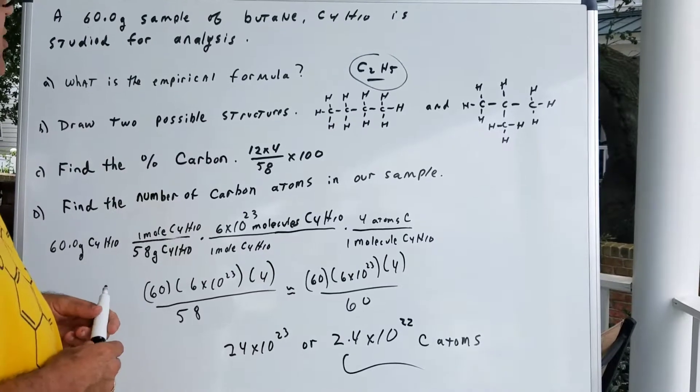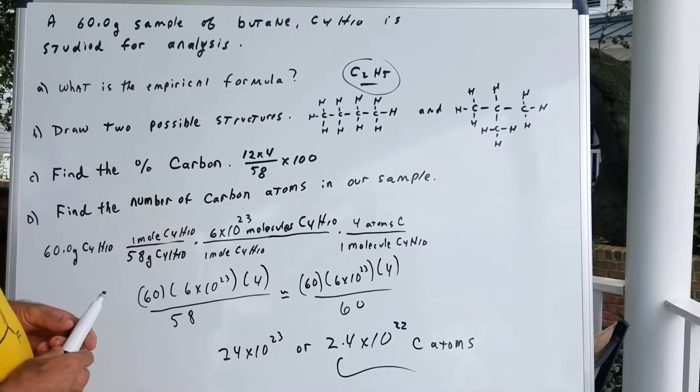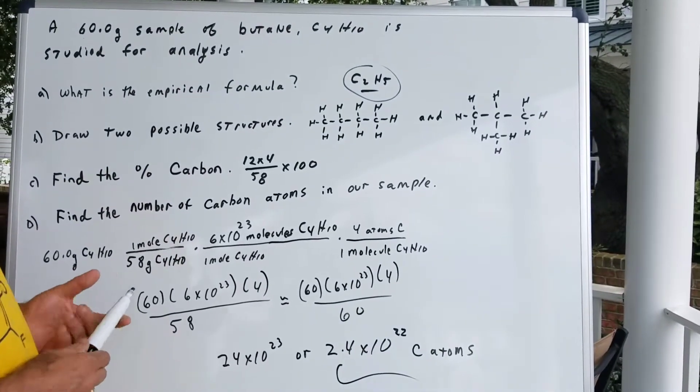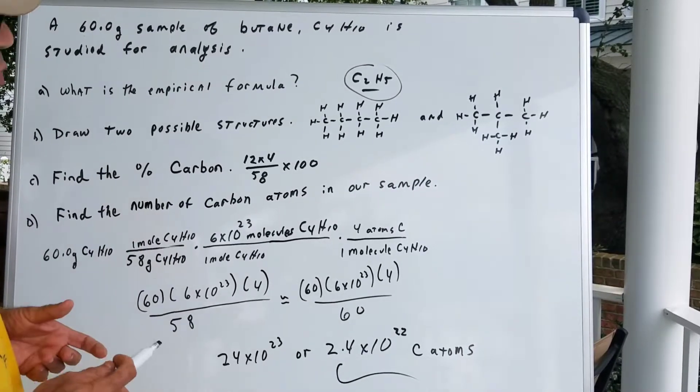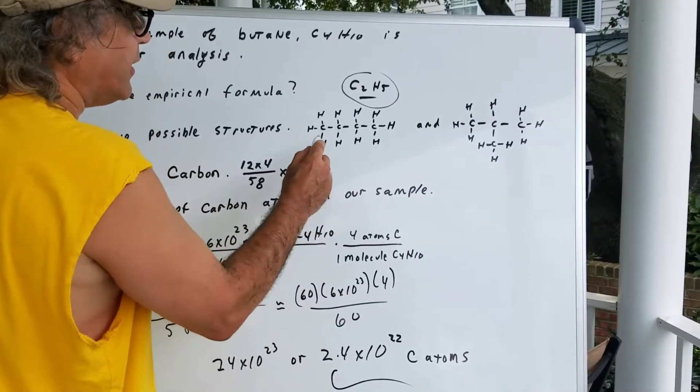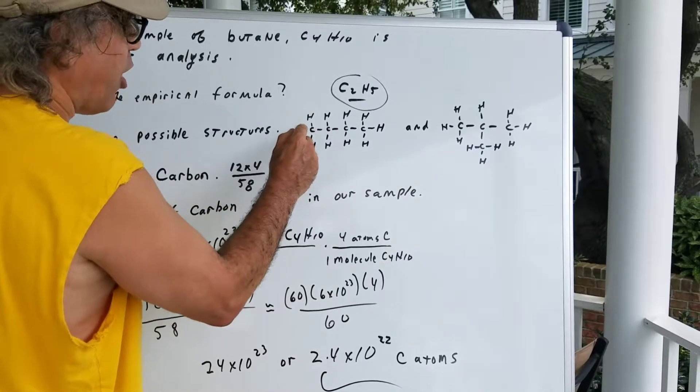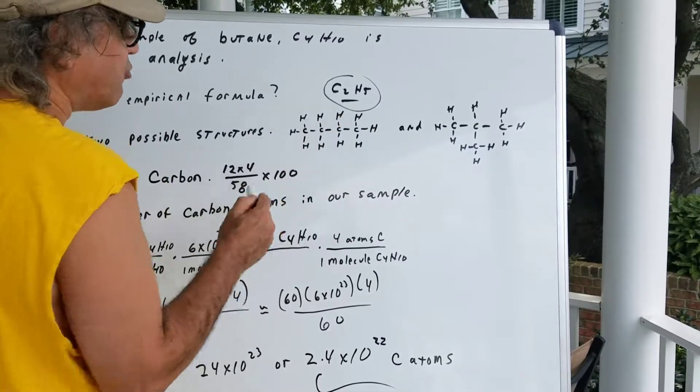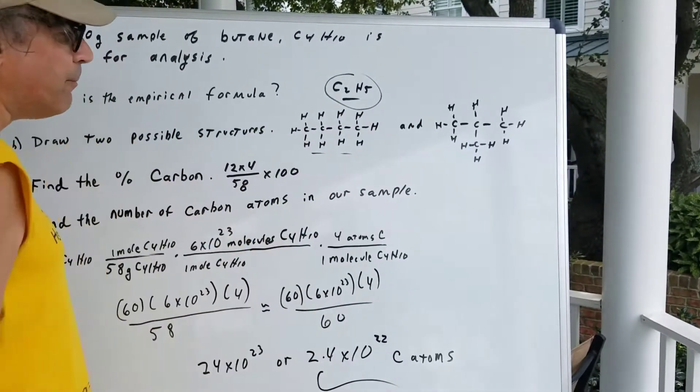Part B of this question, I asked you to draw me two possible structures. Well, if you remembered, carbon needs four bonds. Hydrogen needs one. So if you laid out four in a straight line, and you give each carbon four bonds and attach the hydrogens, you would form butane.